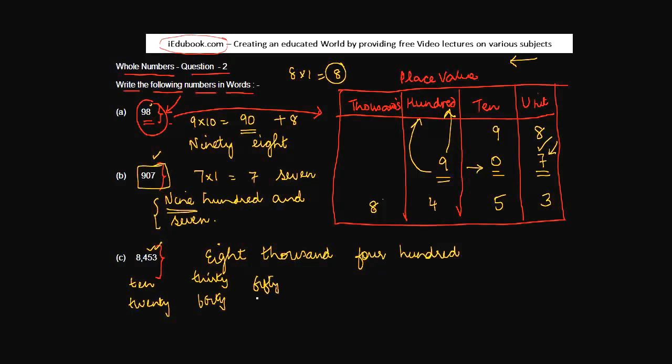Fifty. And you have fifty. Fifty is what? Fifty is nothing but five times ten. Or five tens. We have five tens over here. So we will just write this as fifty. Then you have three units. Three units means what? One, two, three. Three. So eight thousand four hundred fifty three.